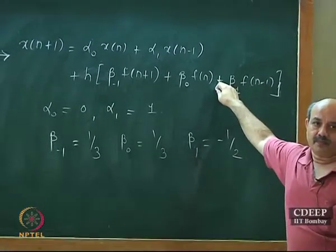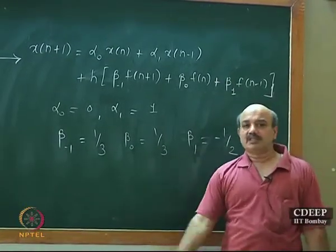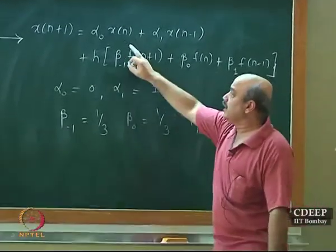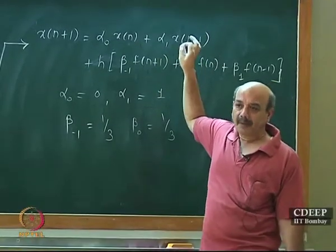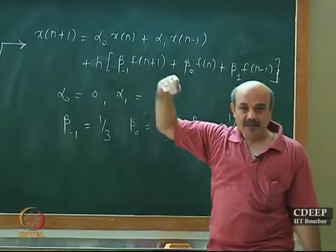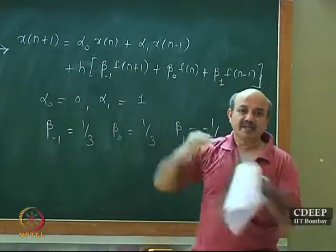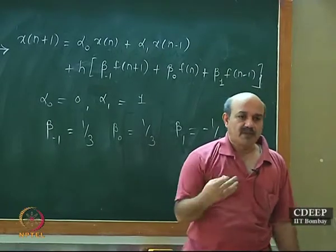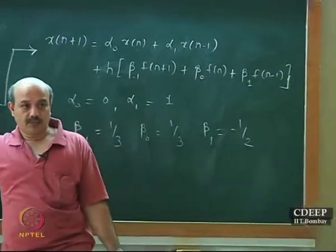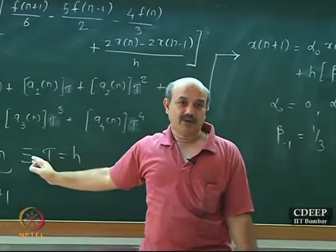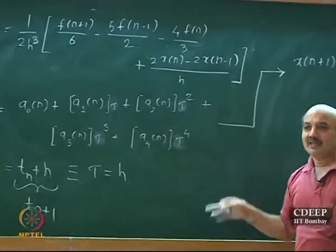The local interpolation polynomial has been constructed using x_n, x_{n-1}, f_n, f_{n-1}, and f_{n+1}. I found the polynomial, substituted τ = h to get x_{n+1}, and rearranged into a form more convenient for programming. There is nothing fundamentally wrong with maintaining the complex form, but this rearranged form is more convenient.